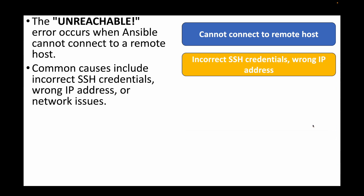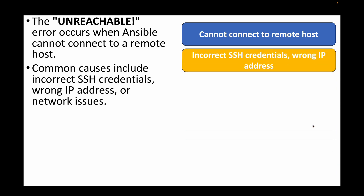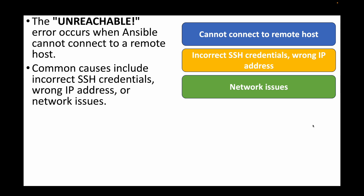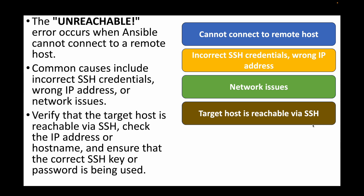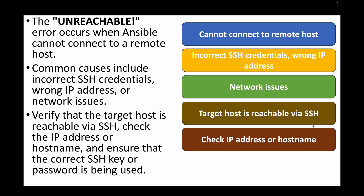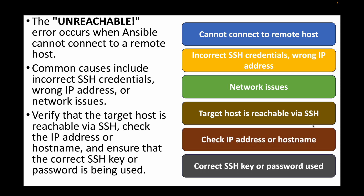Common causes include incorrect SSH credentials, the wrong IP address of the remote machines, or network issues such as a firewall blocking connections. To fix this, verify the target host — do a telnet over port 22 or try SSH directly. Check that you have the right IP address or hostname, and ensure you are passing the correct credentials, such as the right SSH key or password.